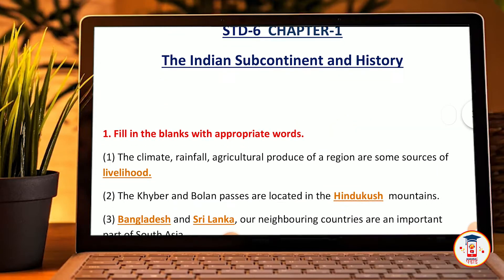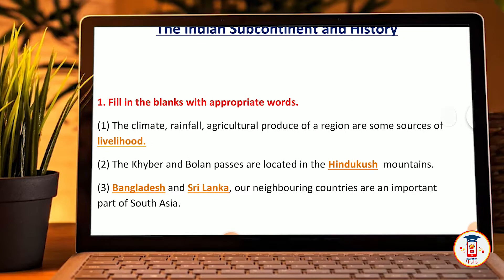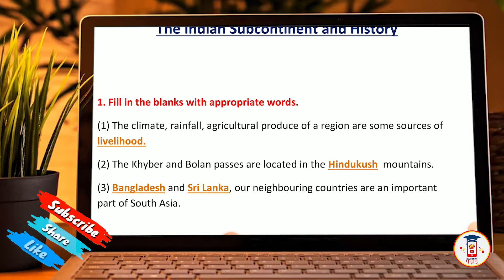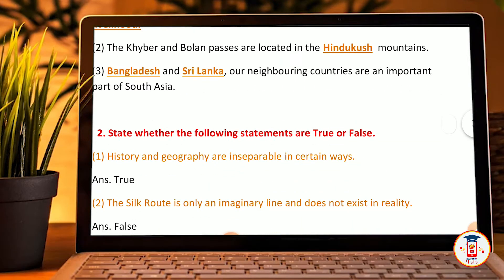First, the climate, rainfall, agriculture, production and region are some sources of livelihood. The Khyber and Bolan Passes are located in the Hindu Kush mountains. Bangladesh and Sri Lanka are neighbouring countries that are important parts of South Asia.